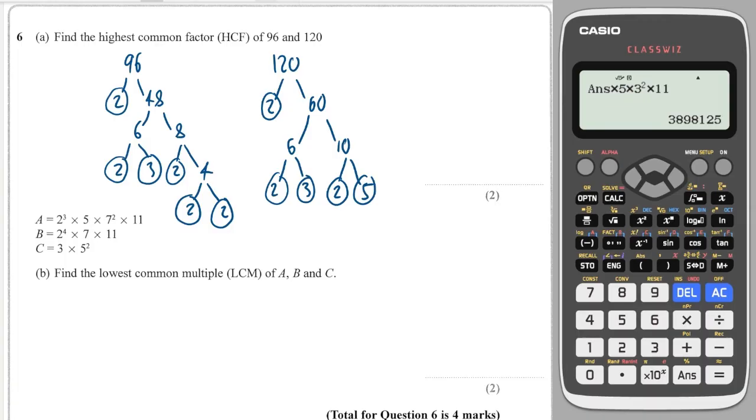Now the highest common factor are the ones that they share. So they share a 2, they share another 2, they share another 2, and they share a 3. And that's it, that's all they share. So that's 8 times 3 which is 24.